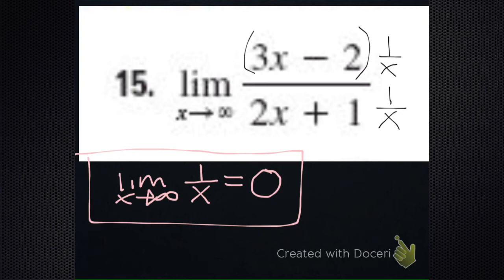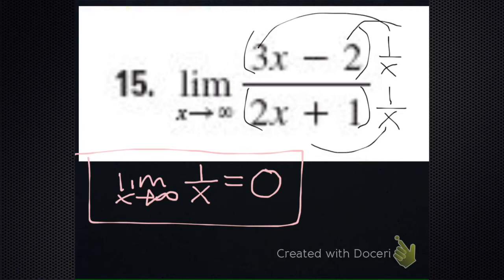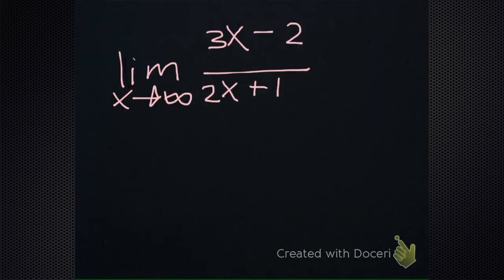How do I know what to multiply it by? You're going to multiply by the reciprocal of the highest power. Here the highest power was 1, that's why I multiply by 1 over x. And it's the distributive property of division under addition.